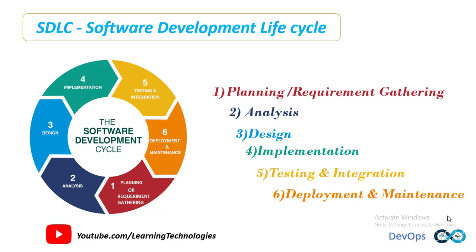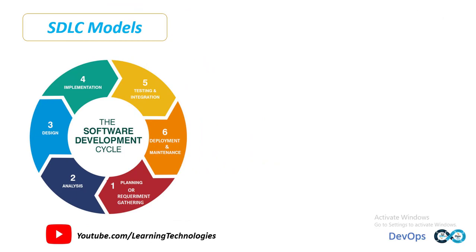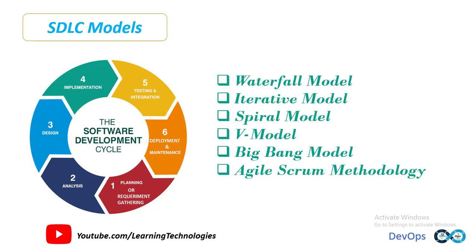Now we will see what are the various SDLC models. There are various software development lifecycle models defined and followed by software development organizations, referred to as software development process models. Each process model follows a series of steps unique to its type. The most important and popular SDLC models followed in the industry are: waterfall model, iterative model, spiral model, wave model, big bang model, and agile scrum methodology.